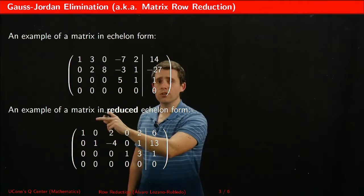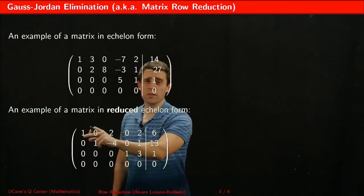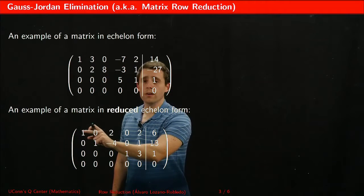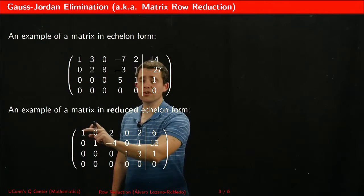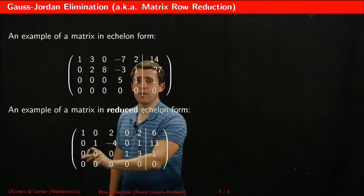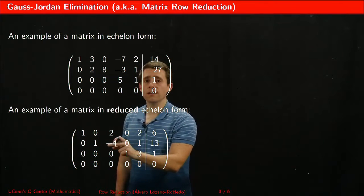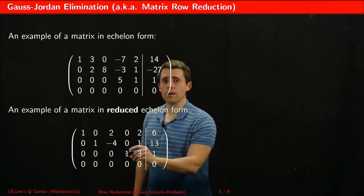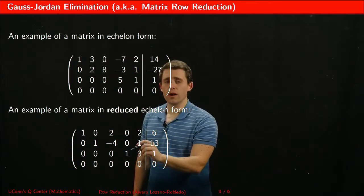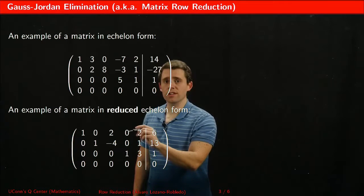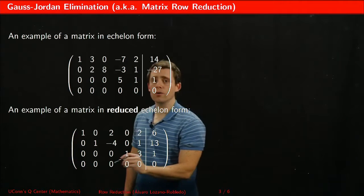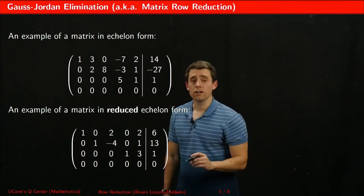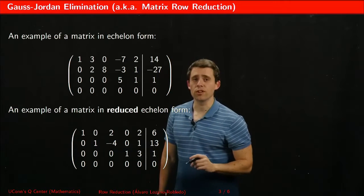The reduced echelon form is another upper triangular form where the pivot positions — those positions with a non-zero entry followed by zeros — are ones. Additionally, above pivot positions there should be zeros. If there are rows of zeros, they must appear at the bottom of the matrix, both in the echelon form and the reduced echelon form.